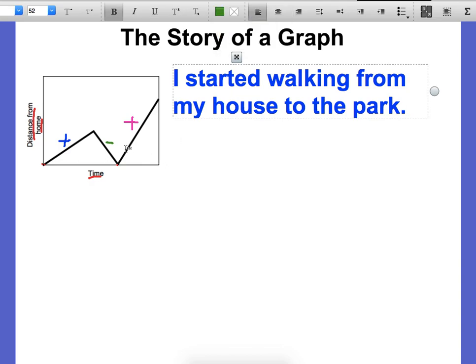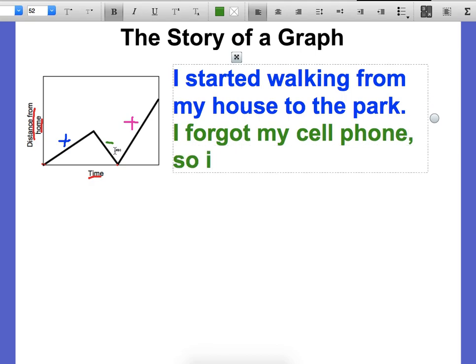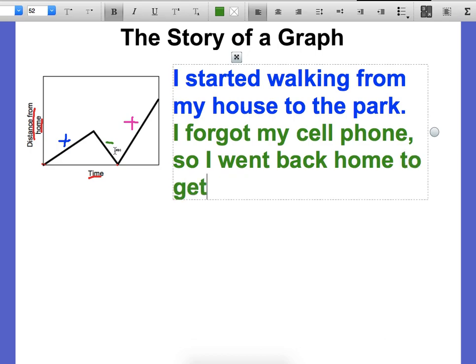All right. Then we have this one that I denoted with a green negative because it's a negative slope. So from here, going back here, they're going to reach home here. So I'll write something like, I forgot my cell phone. So I went back home to get it. And important that it says went back home because right here it touches the bottom. It touches zero. So that means that this person actually did go all the way back home.